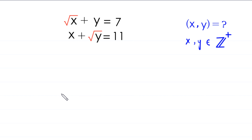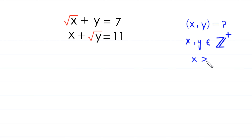Hello everyone, you are welcome to how to solve this very nice system of equations. Root x plus y is equal to 7, and x plus root y is equal to 11. Our job is to find all possible values of x and y such that x and y are positive integers, meaning x is greater than or equal to 1 and y is greater than or equal to 1. So let's start.